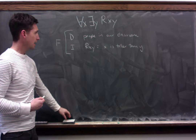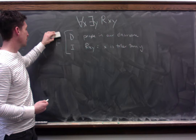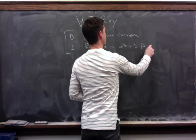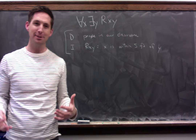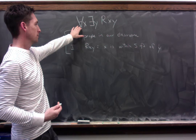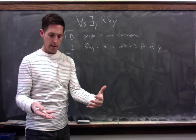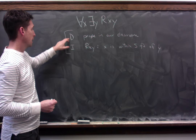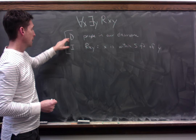Last time we saw that we could switch from false to true by changing the domain. This time I want to show that we can switch from false to true by changing our interpretation. I'm going to leave our domain the same, but switch our interpretation from 'x is taller than y' to 'x is within 5 feet of y.' Think about what this says now: every person in our classroom is within 5 feet of some person in our classroom. If you think about how classrooms are laid out, that's true — everyone is within 5 feet of somebody. So on this universe — this domain and this interpretation — we've got a true formula.